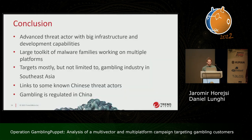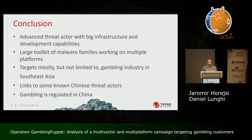In conclusion, this is an advanced threat actor with a big infrastructure, strong development capabilities (multiple new complex malware families), 12 different malware families across three platforms, and targeting mostly but not limited to the gambling industry. We showed links to known Chinese threat actors. One last thing: gambling is regulated in China, so it might make sense for a state actor to monitor companies operating in a gray zone or not complying with rules. Our blog post will be published now as an excerpt of the Windows malware analysis, with the full blog post including all other analysis coming in about two weeks.